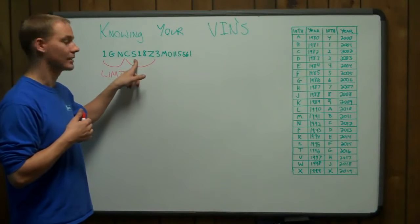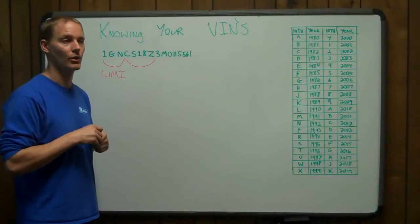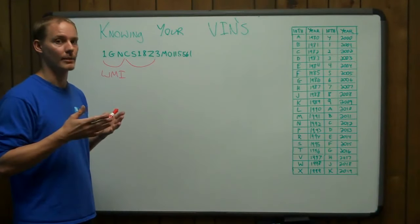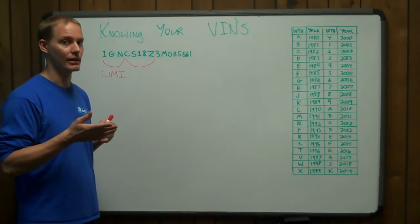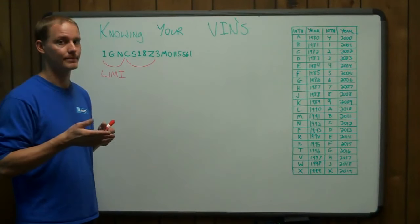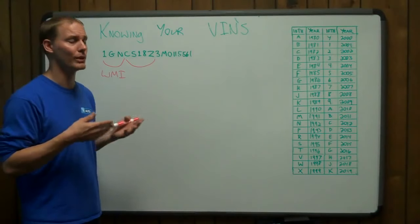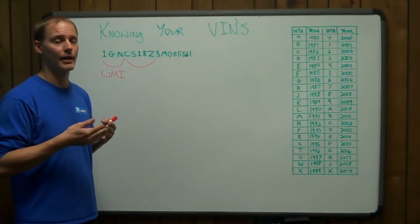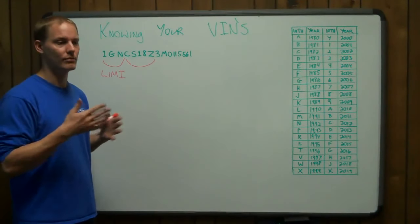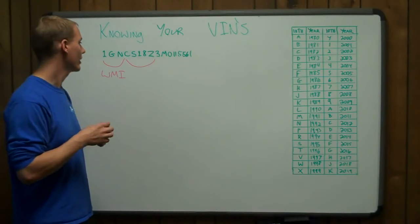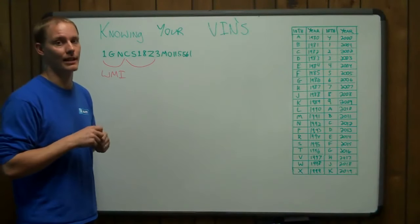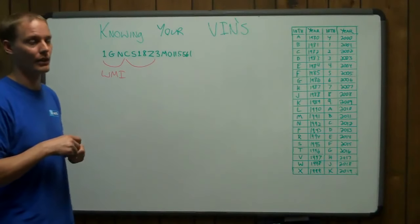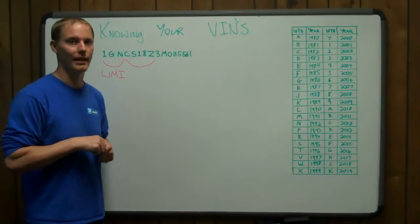The fifth digit, in this case an S, is the series. So in the 1980s, for example, General Motors made full-size trucks that were C and K series and R and V series. This basically meant two-wheel drive and four-wheel drive, but it was several different series. So in this case, we have an S series, which happens to be an S10 series truck, although they don't usually connect like that.